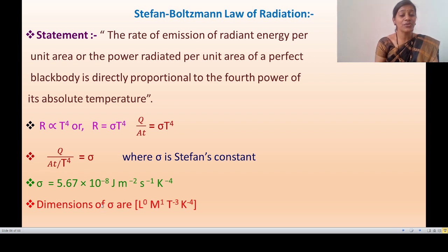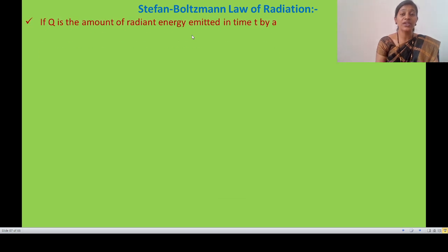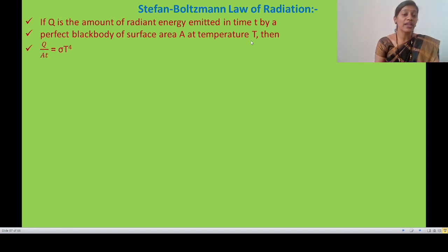The dimensions of Stefan's constant are: L⁰, M¹, T⁻³, K⁻⁴. If Q is the amount of radiant energy emitted in time t by a perfectly black body of surface area A at temperature T, then Q upon At equals sigma times T⁴. For an ordinary body, R equals E times sigma times T⁴.